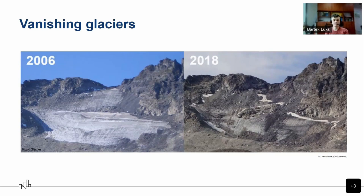Four years ago, one of the glaciers in Iceland — called Okjökull — disappeared. Icelanders officially confirmed that this glacier stopped to exist, and it happened within the lifetime of many people, who could observe its vanishing in real time.